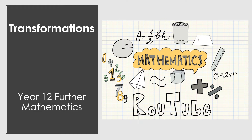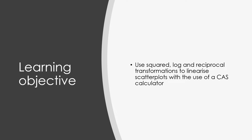G'day everyone and welcome to another RootTube video. In today's video we're going to focus on transformations which is in the Year 12 Further Maths course. Just the one learning objective for today's lesson, which can sort of be split up into three different learning objectives, but I'll group them all together. We're going to be using squared, log and reciprocal transformations to linearise scatter plots with the use of a CAS calculator, and you'll see screen recordings of me using my CAS calculator and talking through those steps.